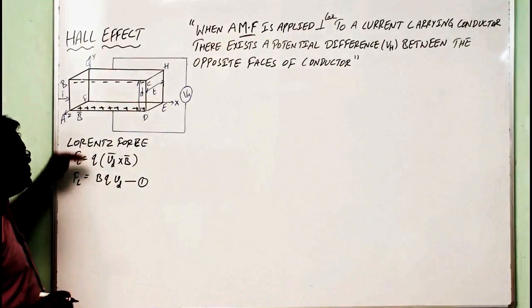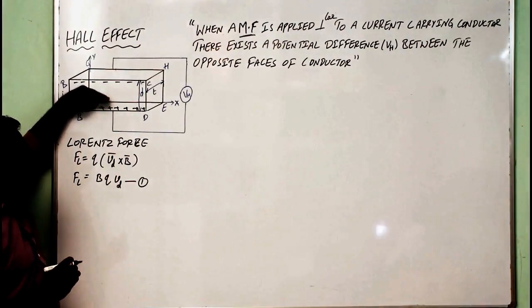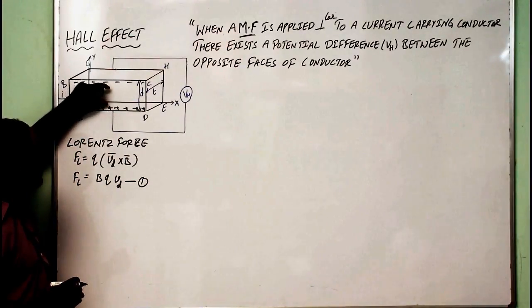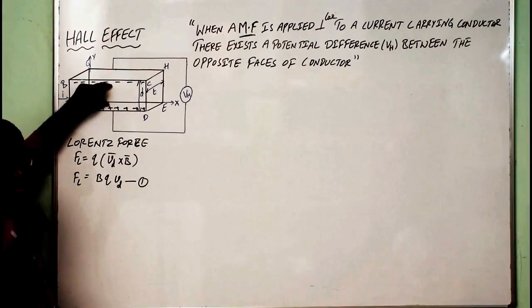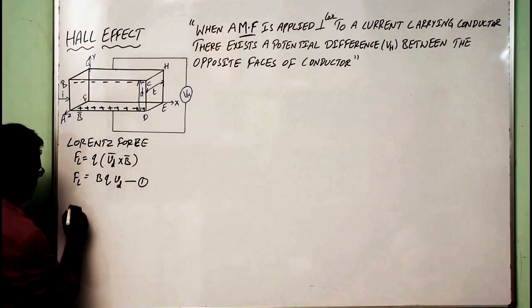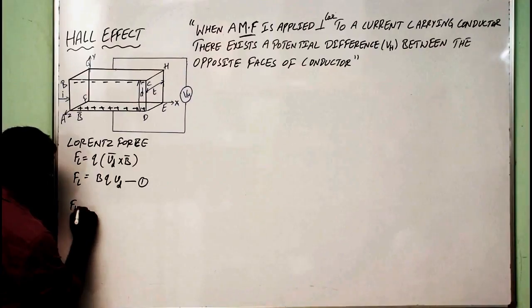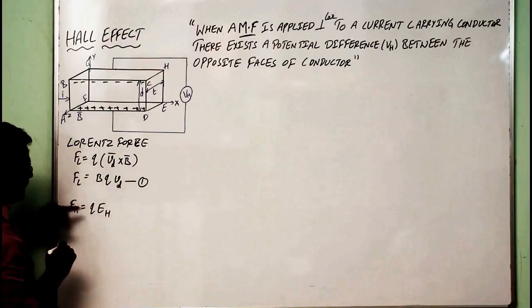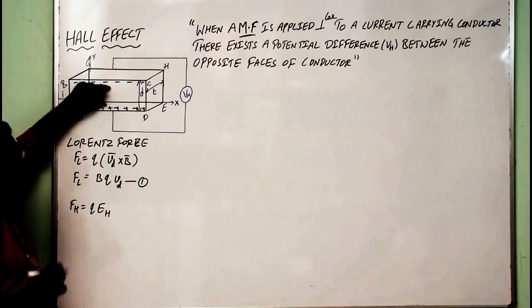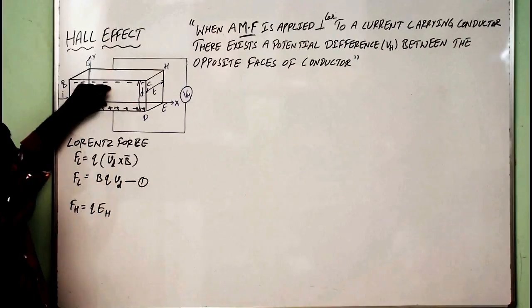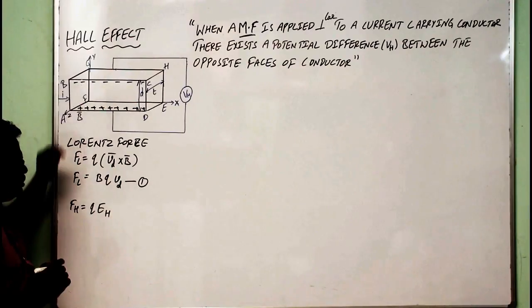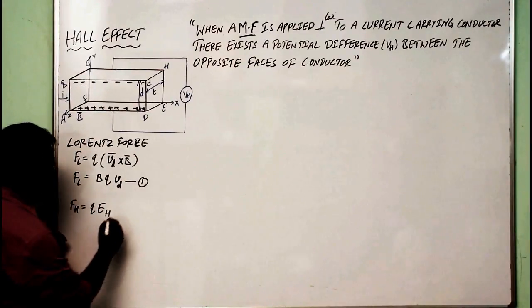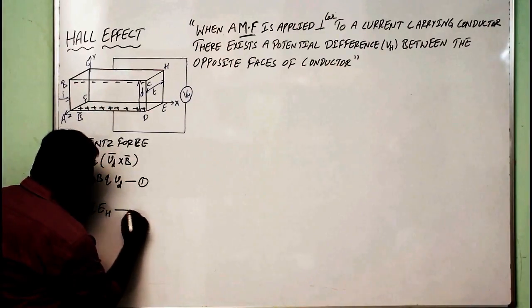Because of this Lorentz force, the charge carriers are moving from their rest position to the upper half and the lower half. The force which is maintaining the electrons or holes in position is given by F_H, which is nothing but Q·E_H. Because of this electric field E_H only, the electrons and the holes are maintained in the upper part and the lower part.